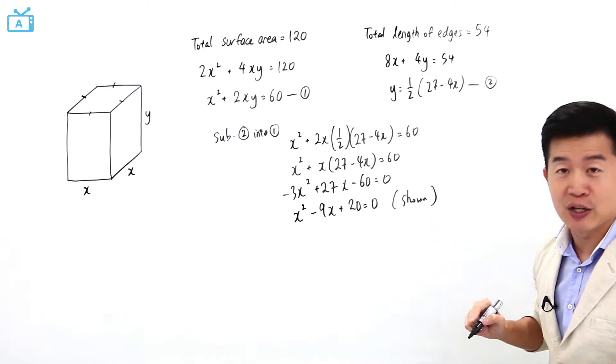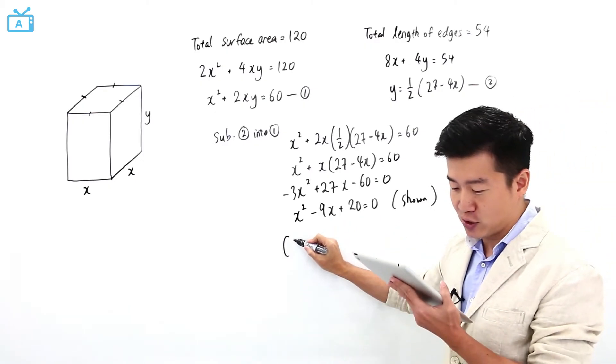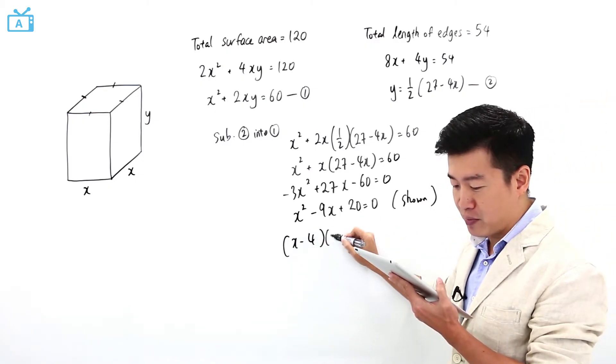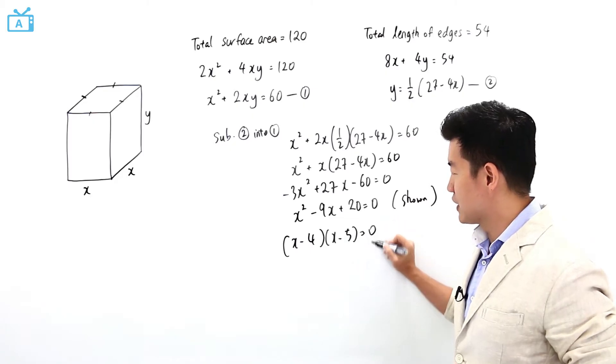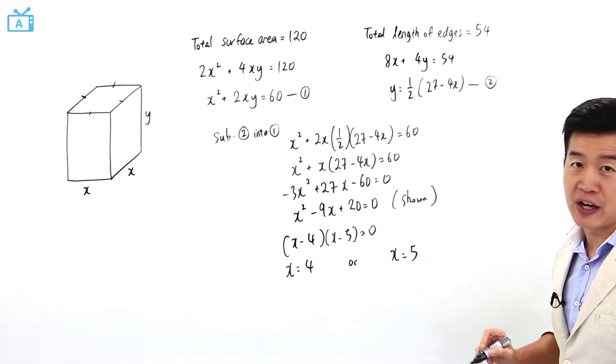But I also need to find the possible values of x and y. So using this equation, I'm going to factorize it into x minus 4 multiplied by x minus 5 equals 0. So x is going to be 4 or x is going to be equal to 5.